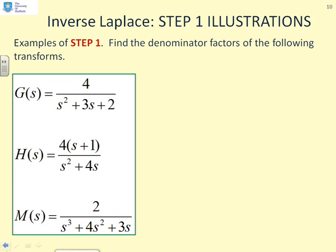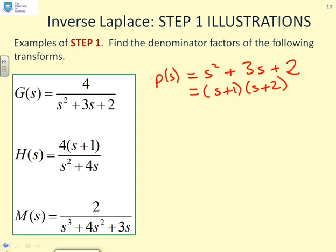Some examples of step 1. All we're doing is factorizing the denominator. If I look at G, you'll see the pole polynomial is given as s squared plus 3s plus 2. By inspection, I can write this as (s plus 1)(s plus 2), or you could put r_1 equals s plus 1 and r_2 equals s plus 2. If I look at H(s), the pole polynomial is s squared plus 4s, which by inspection I can write as s times (s plus 4).